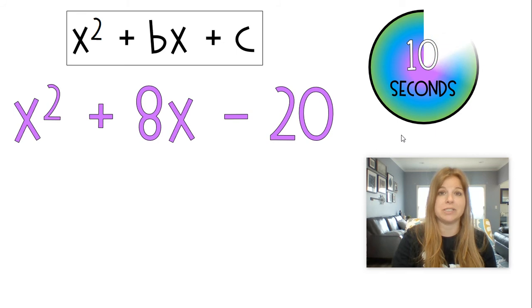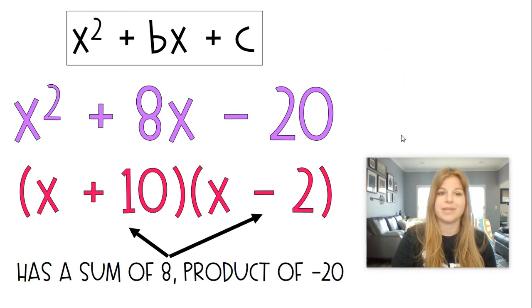And our last trinomial like this. x squared plus 8x minus 20. So you're thinking what multiplies to get a negative 20 that adds up to get 8. I hope you got it. Positive 10, negative 2. Now, next round.